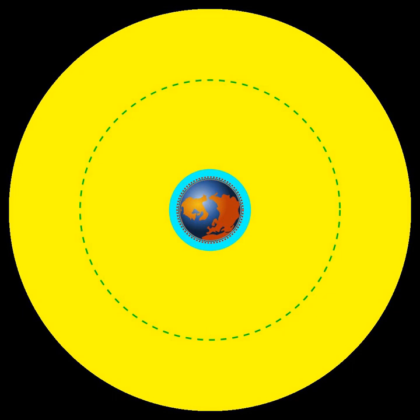Tundra orbit, a synchronous but highly elliptic orbit with significant inclination, typically close to 63.4 degrees, an orbital period of one sidereal day (23 hours, 56 minutes for the Earth). Such a satellite spends most of its time over a designated area of the planet. The particular inclination keeps the perigee shift small.